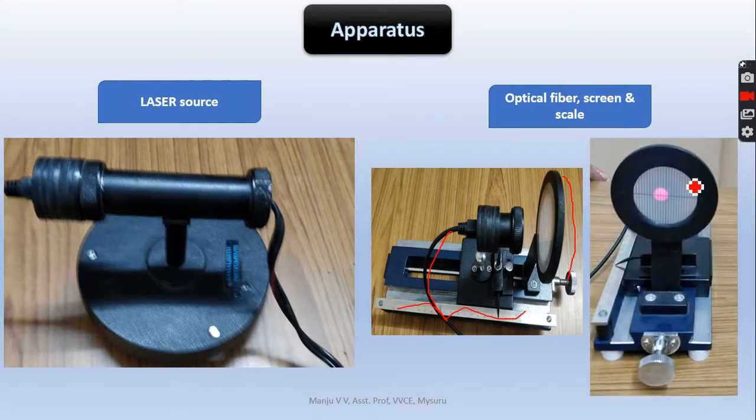This is another view, the vertical view. This is the screen, this is the scale, and this is the optical fiber. For this circular fringe, we have to measure the total diameter using a scale.